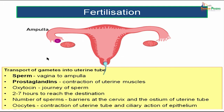The sperm travels through the vagina into the ampulla of the uterine tube. Prostaglandins help in the contraction of uterine muscles, and oxytocin also aids the journey of sperm into the uterine tube. The estimated time is roughly 2 to 7 hours to reach the destination. The sperm must cross barriers at the cervix and at the ostium of the uterine tube. The oocytes are sucked up into the uterine tube by contractions of the tube and its epithelial lining, reaching the ampulla. The sperm travels through vagina, cervix, body of the uterus, and finally reaches the ampulla.